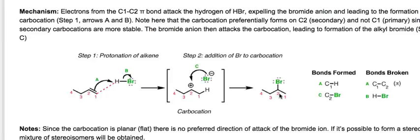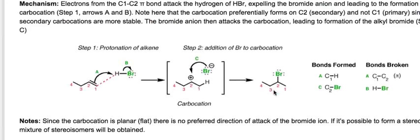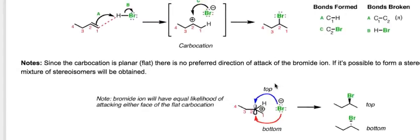One extra detail: we're forming a carbocation, and carbocations are flat — sp2 hybridized. If the product has a stereocenter, the incoming bromine ion can attack from either the top face or the bottom face of the flat carbocation with equal, 50-50 likelihood. So even starting from an achiral alkene and forming a chiral product, we get a racemic mixture of stereocenters. Any time a stereocenter is formed under these conditions with no chiral influence, the result is a racemic mixture.